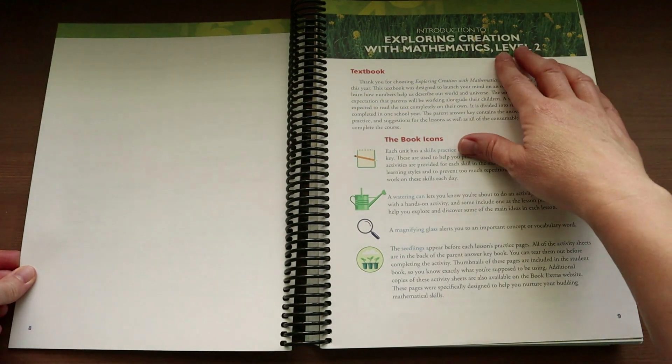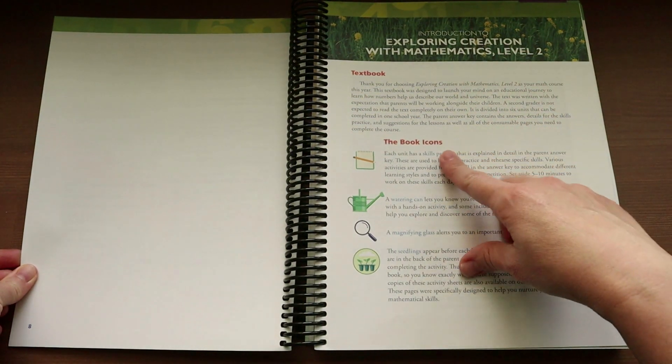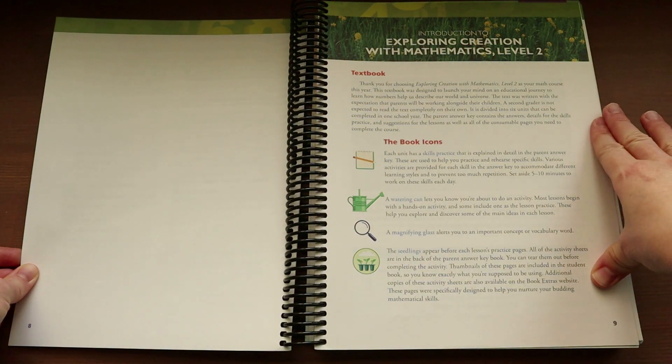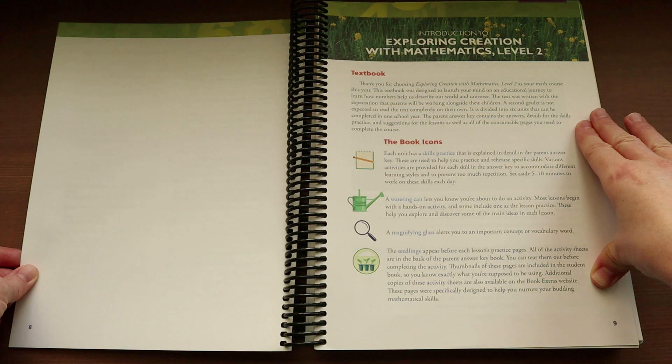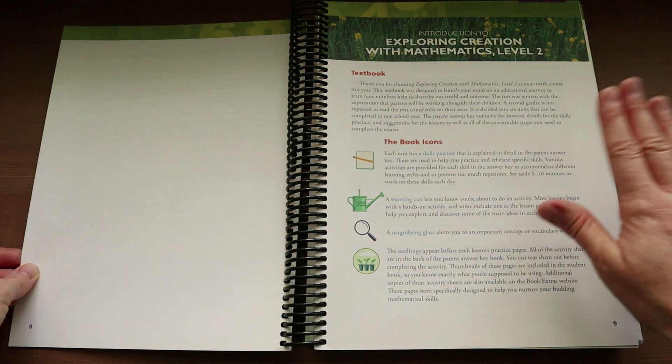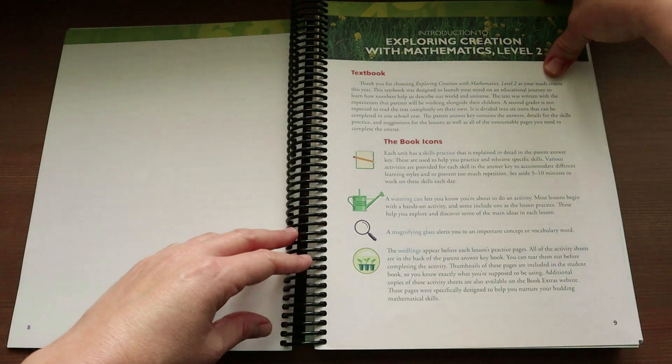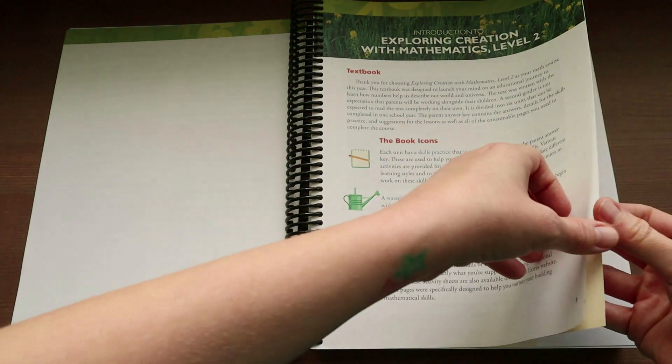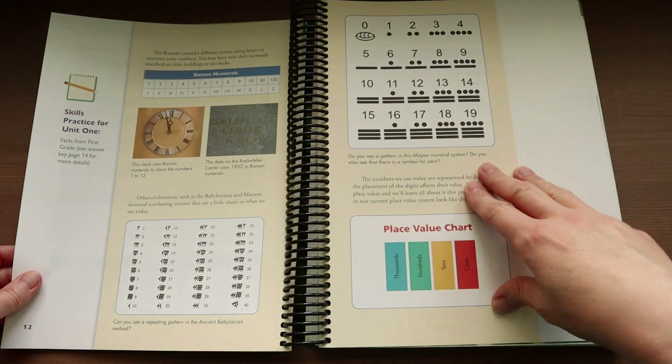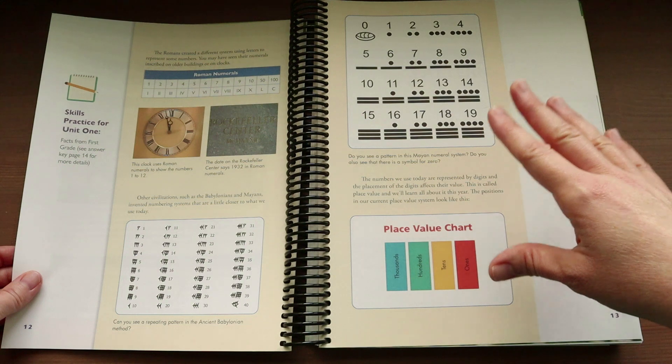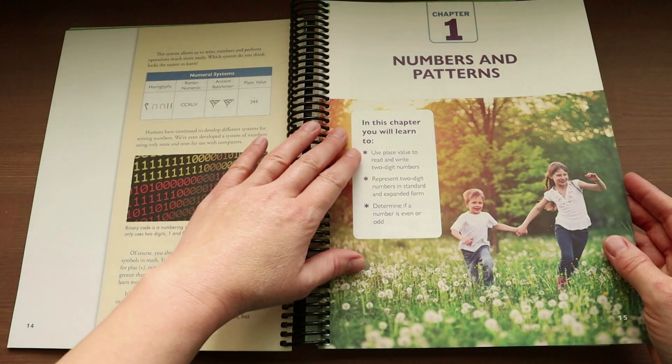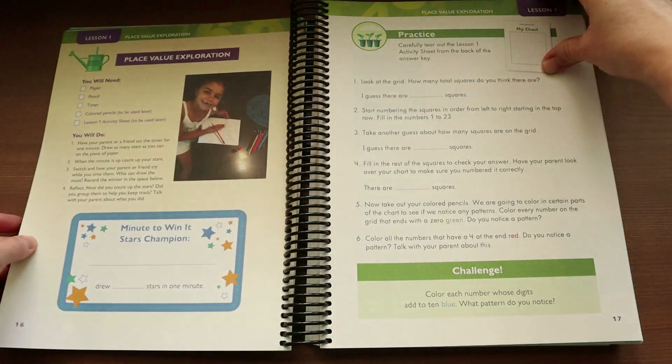The next section is an introduction to the curriculum. It'll go over what the book icons mean, and then on the next page there is a password where you can access some of the book extras on their website. If your child needs more practice you can get some extra sheets to download there. Then it goes into the unit introduction and ties in God and science, and after that you jump right into the first chapter.